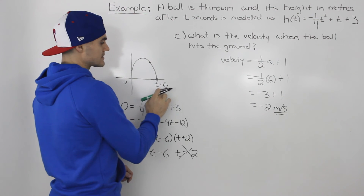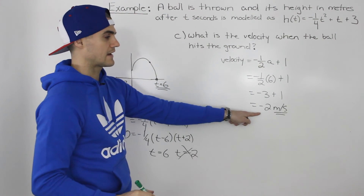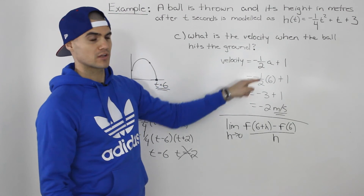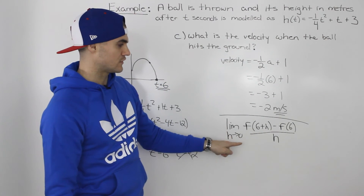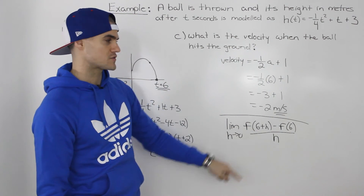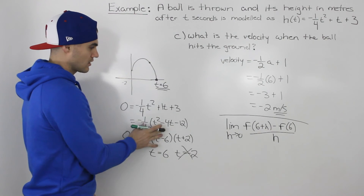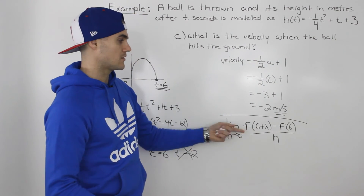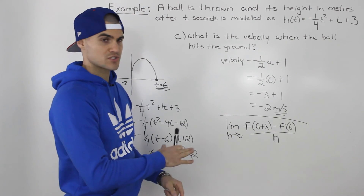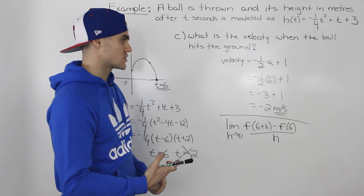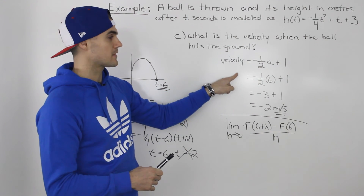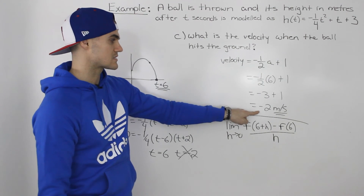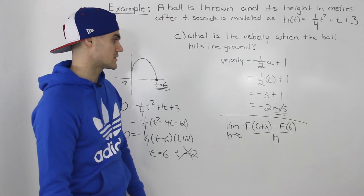So when the ball hits the ground at a time value of six, it's traveling at negative two meters per second. Another way you could solve this without the general velocity formula from part b is to use the difference quotient at the specific time value of six — but that involves a lot of algebra. As suggested, finding the general velocity equation in part b lets you use it in both parts b and c, giving the same answer with much less work.